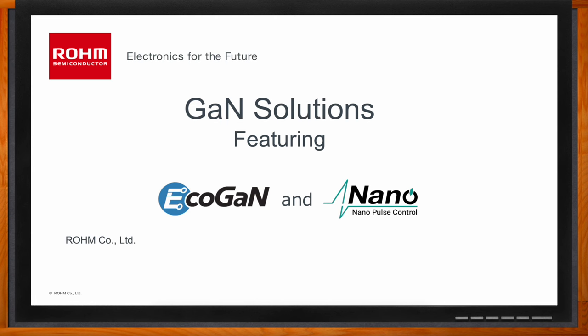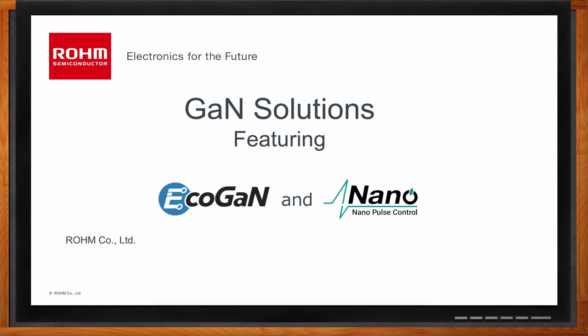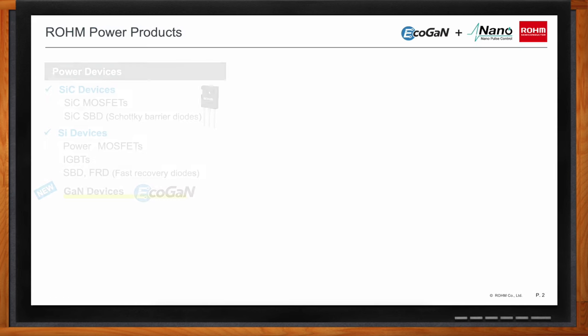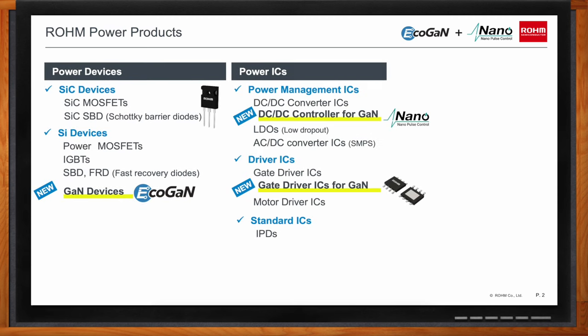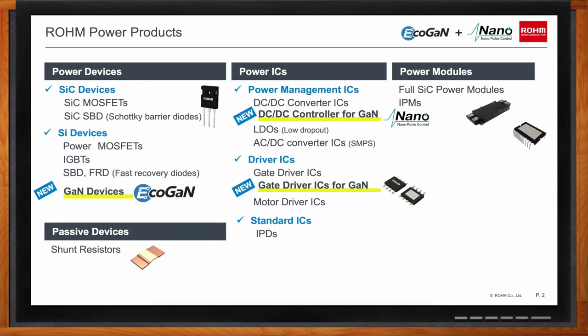Hi Kengo, thank you so much for joining me. So Kengo, we're talking about EcoGaN and Nano Pulse Control GaN solutions today, but before we dig into the details, Rome offers a wide variety of power products. Can you give us a brief rundown? One of Rome's goals as a company is to be a complete power solutions provider. This includes individual power devices, power integrated circuits, power modules, and key passive devices. Rome has power transistors and diodes built in three different technologies: silicon carbide, silicon, and our newest offering — gallium nitride.